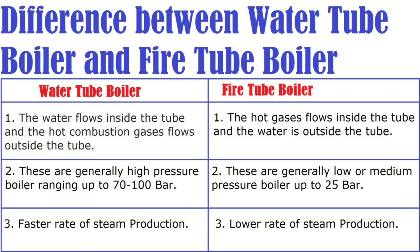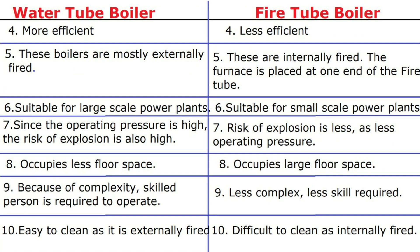There are a few differences between water tube boilers and fire tube boilers. In water tube boilers, water flows inside the tube and hot combustion gas flows outside the tube. Water tube boilers are generally high-pressure boilers ranging up to 70 to 100 bar, while fire tube boilers are low or medium pressure with a maximum of up to 25 bar. Water tube boilers have a fast rate of steam production, while fire tube boilers have a low rate. Water tube boilers are more efficient and fire tube boilers are less efficient.